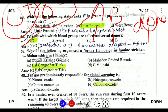Which of the following organized a no-tax campaign in famine-stricken Maharashtra in 1896-97? Bal Gangadhar Tilak was the person who organized a no-tax campaign, even before Gandhiji launched the Champaran Satyagraha.